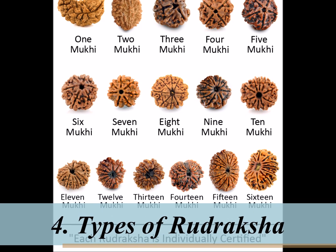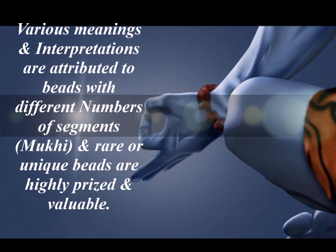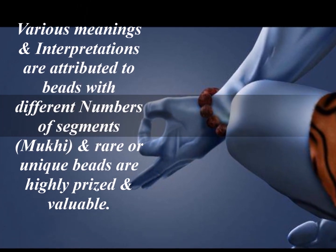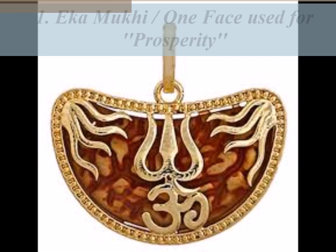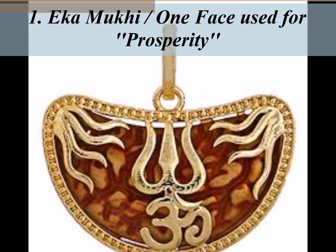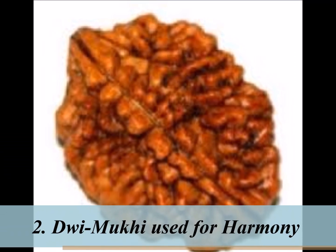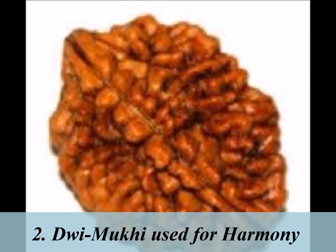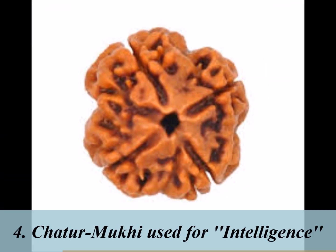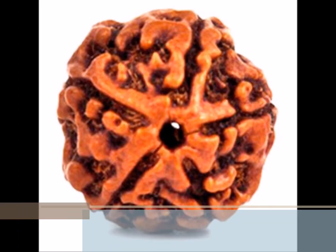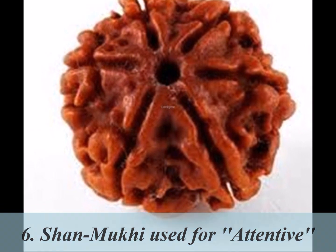The fourth topic is the types of Rudraksha. Various meanings and interpretations are attributed to beads with different numbers of segments, i.e. Mukhi, and rare or unique beads are highly prized and valuable. First is Ek Mukhi, the one-faced Rudraksha, used for prosperity. Second is Dwi Mukhi, the two-faced Rudraksha, used for harmony. Third is Tri Mukhi Rudraksha, used for better concentration. Fourth is Chatur Mukhi, used for intelligence. Fifth is Panch Mukhi, used for good health.